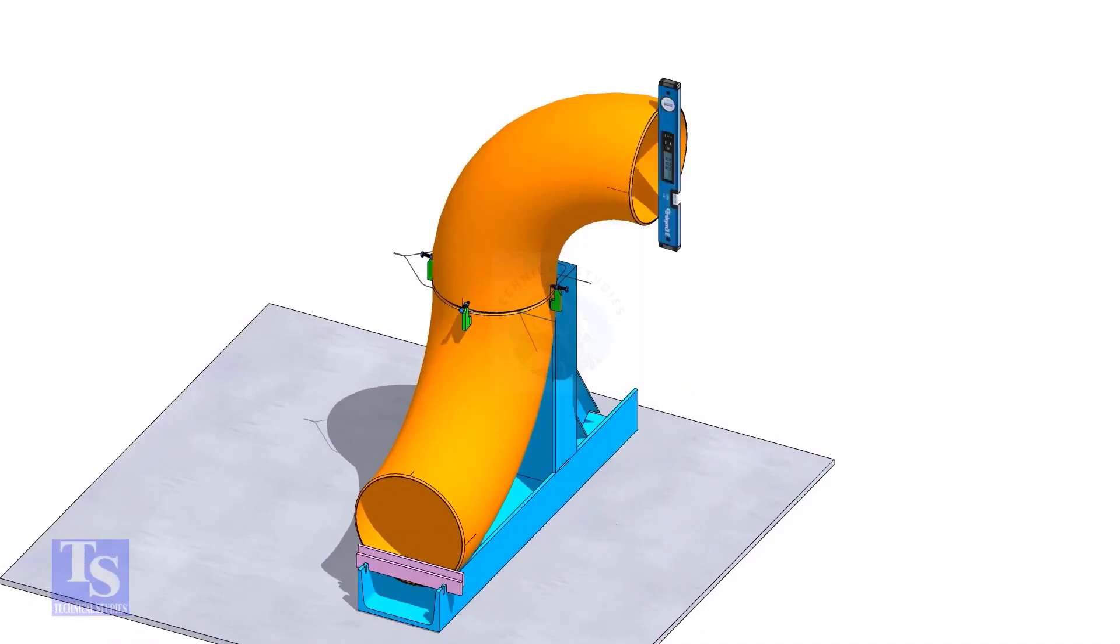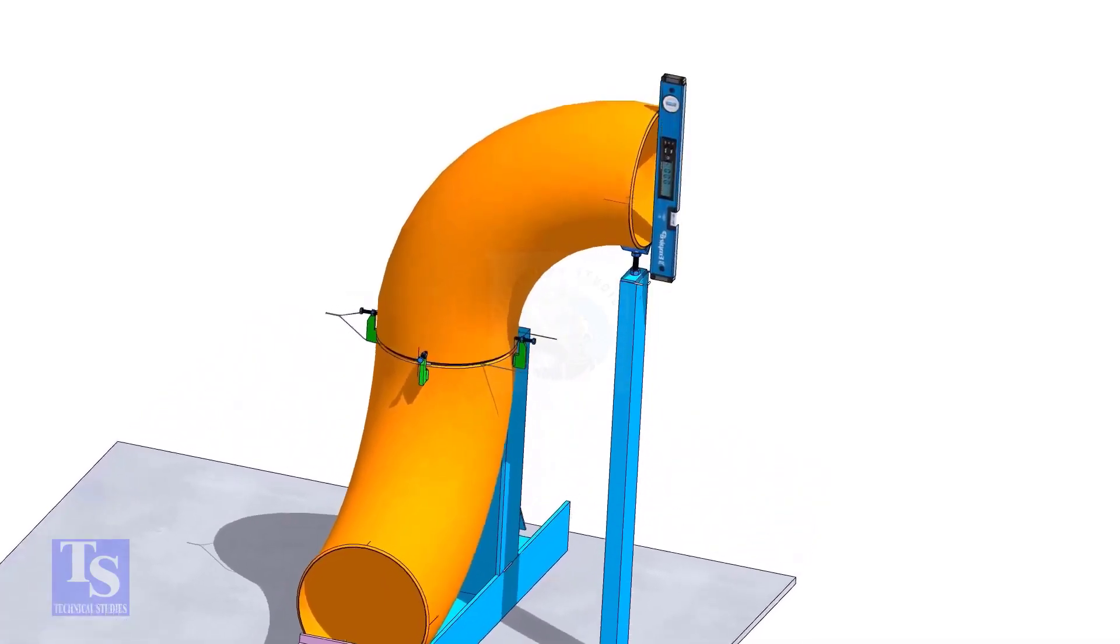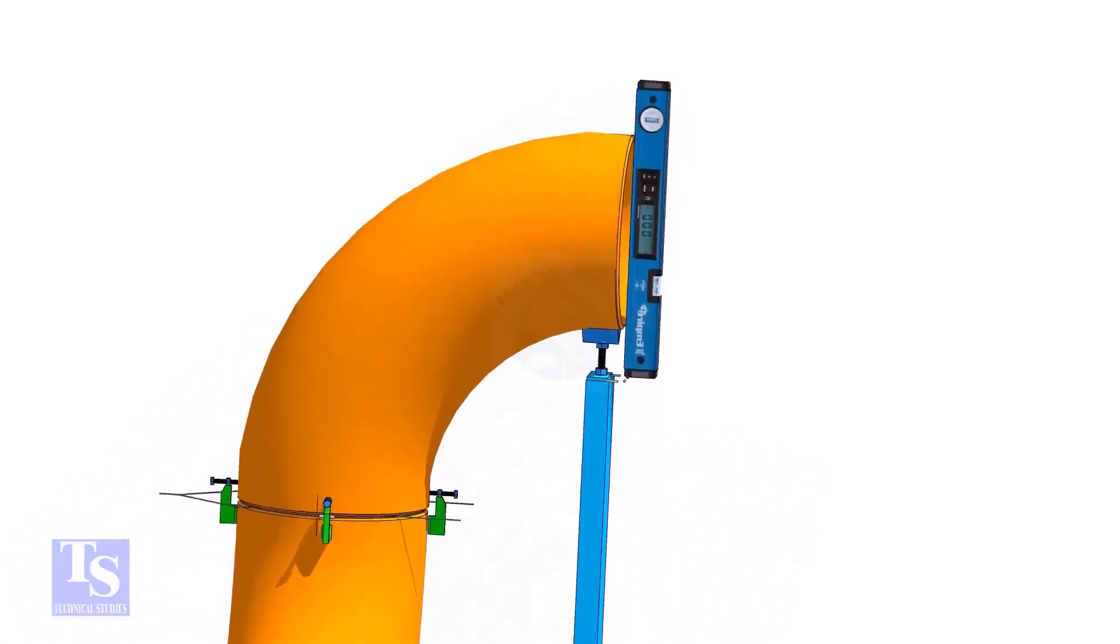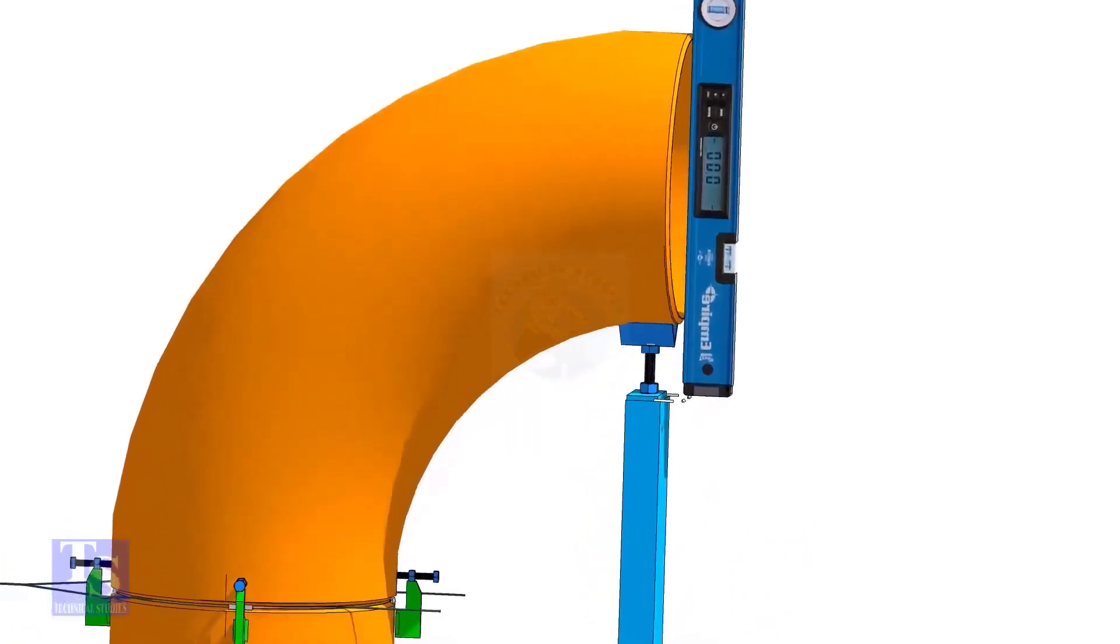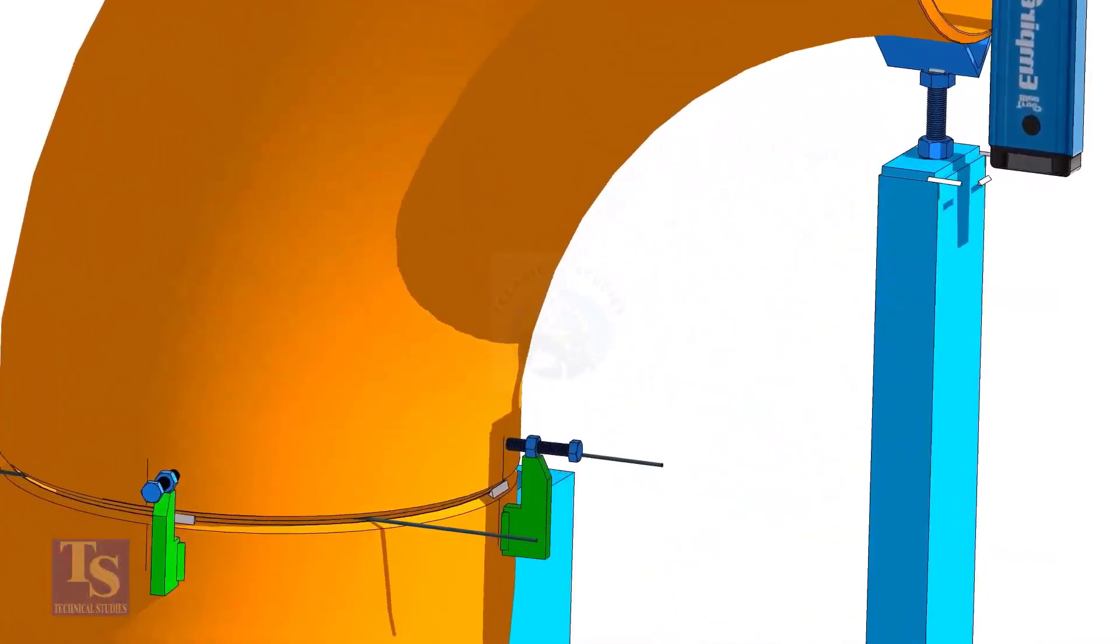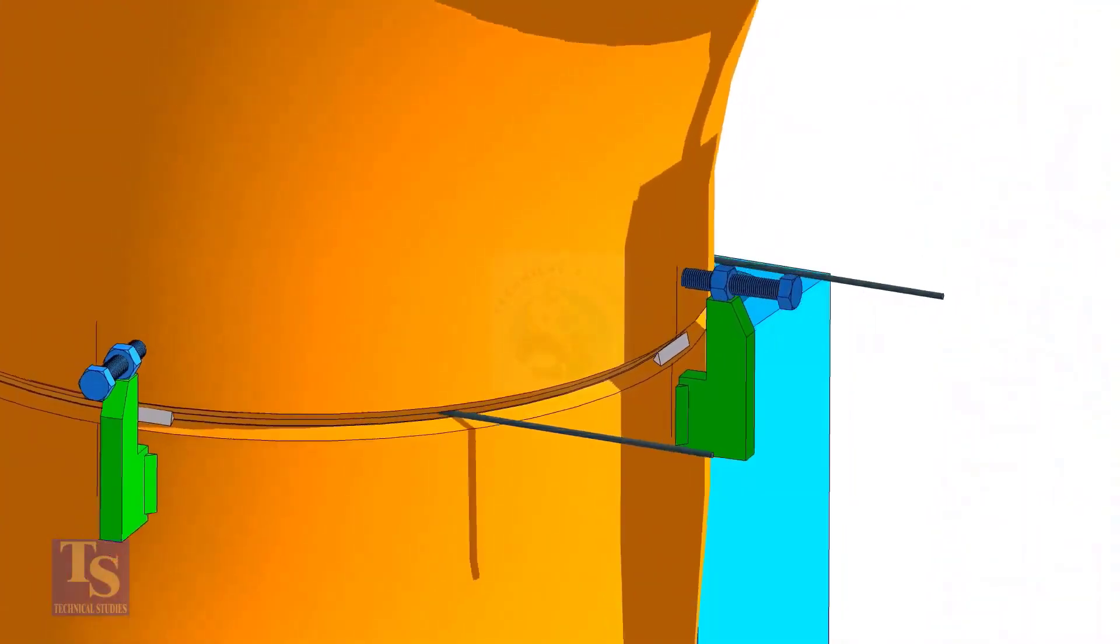Check the verticality of the elbow face. Tack weld on this side and the back side of the elbow.